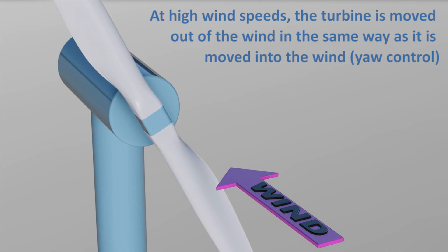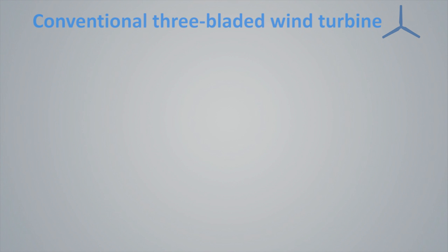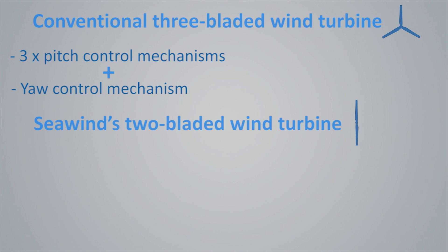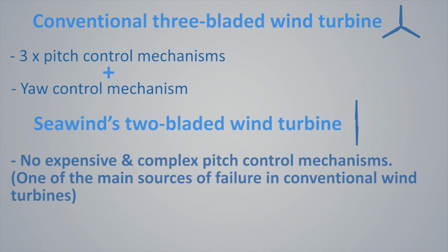One of the key differences is that our solution eliminates the pitching and, therefore, the blade pitch mechanism. Blade pitch mechanisms are complex, costly, and one of the main sources of failure in conventional wind turbines.